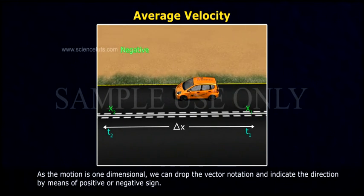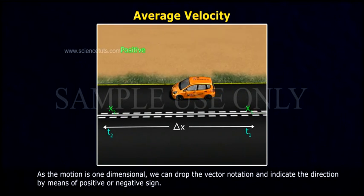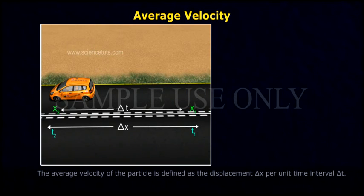we can drop the vector notation and indicate the direction by means of positive and negative signs. The average velocity of the particle is defined as the displacement delta x per unit time interval delta t.